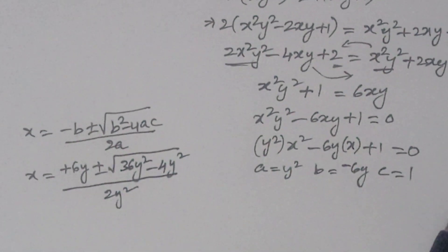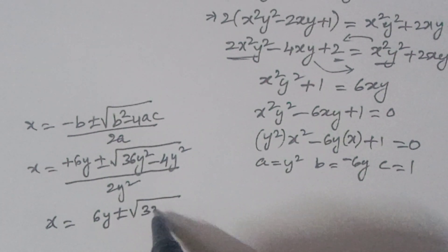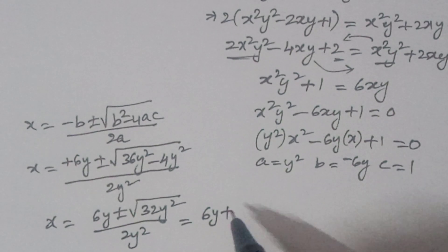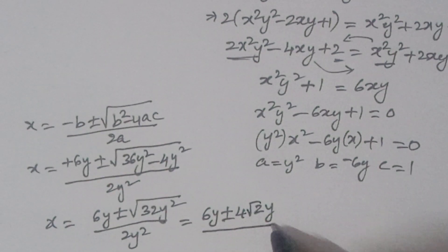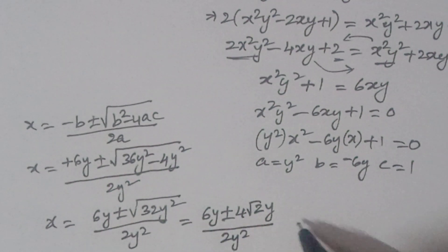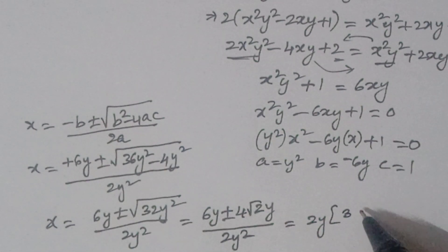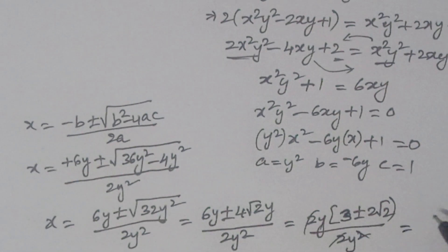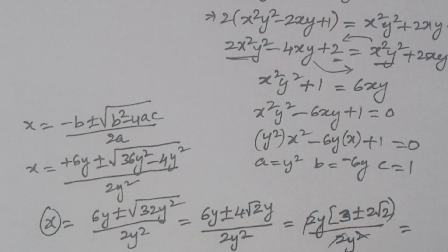Simplifying: x = (6y ± √(32y^2)) / 2y^2 = (6y ± 4√2·y) / 2y^2. Taking 2y common: x = 2y(3 ± 2√2) / 2y^2. The 2y cancels, so x = (3 ± 2√2) / y, meaning xy = 3 ± 2√2.